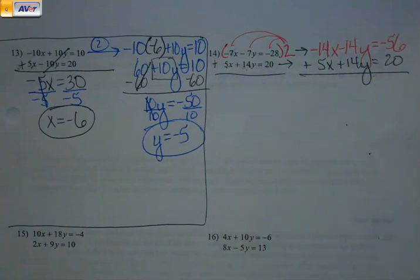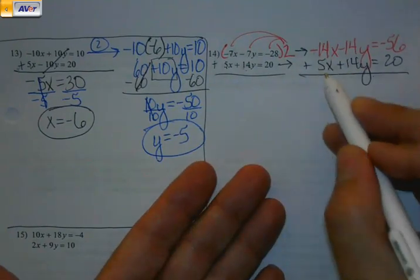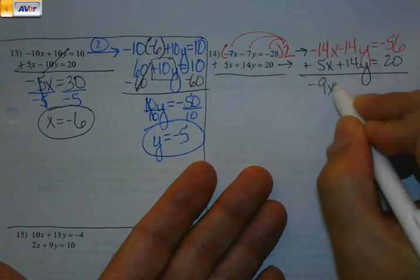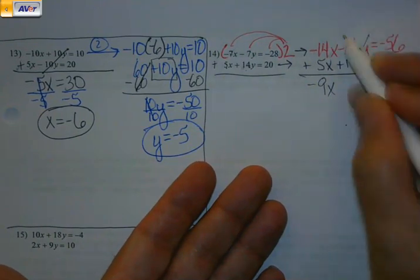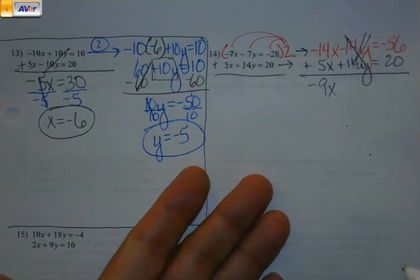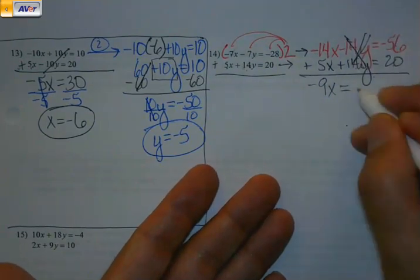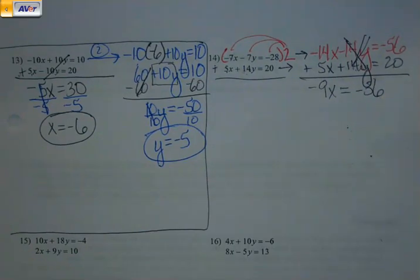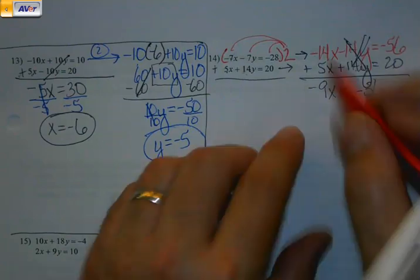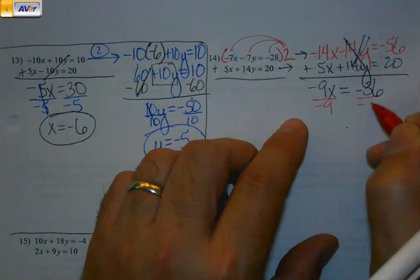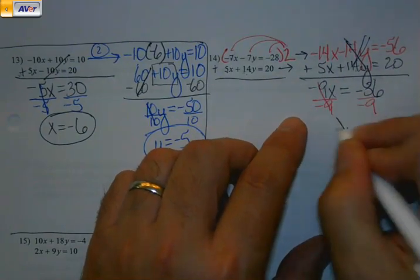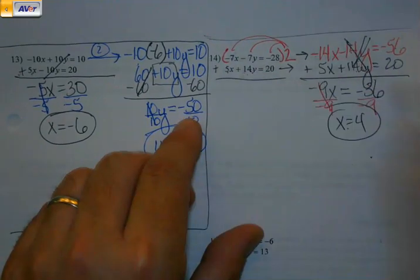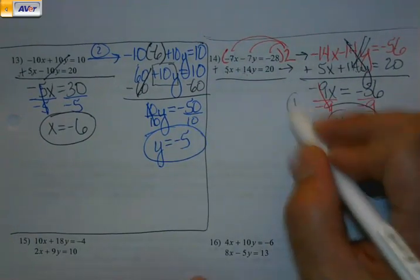The goal is always to get rid of a variable. It doesn't matter if it's x or y. This time it ends up being y. Negative 14 plus 5 is negative 9x. Negative 14 and positive 14y cancel. Negative 56 plus 20 is negative 36. And I have a one-step equation to solve. I've got my x. There's my first step.